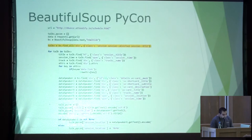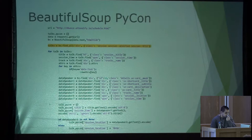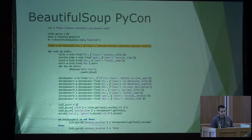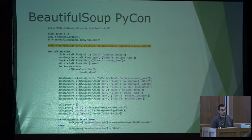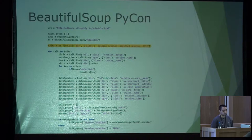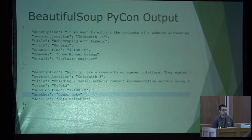This is a more complete example where we are extracting information about a Python conference. The first thing we have to do is select the elements we want to analyze. In this case, for extracting information about the Python conference, we can see that we have a div element, and inside this element is all the information we want to extract. The output for this script shows the description, session location, title, track, session time, speaker, and details.